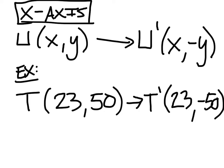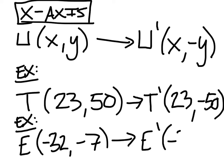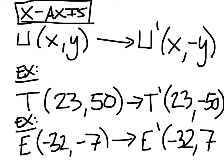This gives us a need for a second example. What if we start out with point E at negative 32 and negative 7? If we reflect this over the x-axis, we'll end up with E prime. The x value, negative 32, stays the same, but in this case notice this is a negative 7 — so what we need to do is change that to a positive 7, and that would be our image of E.